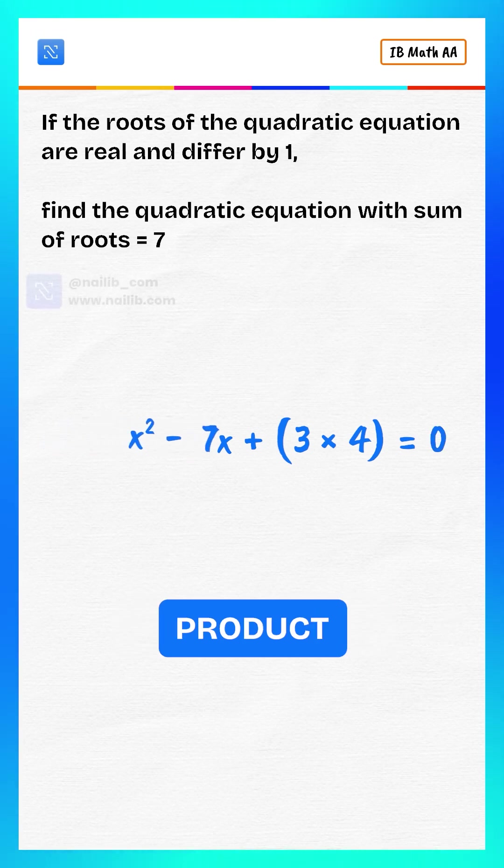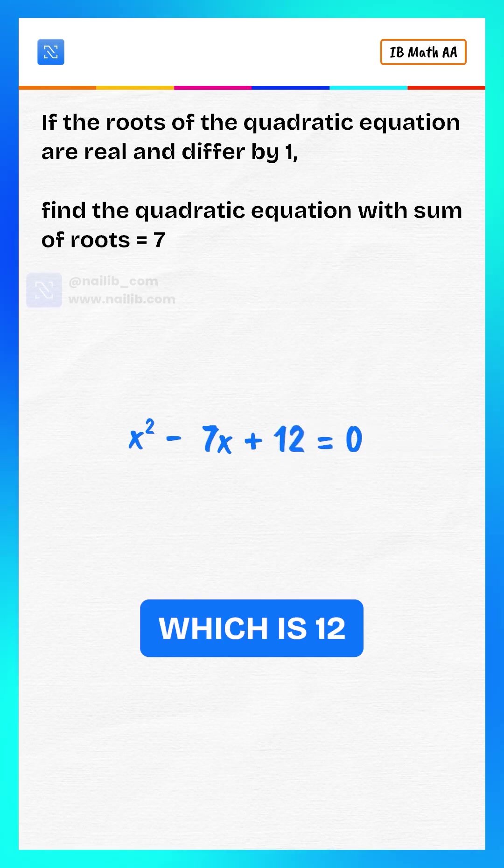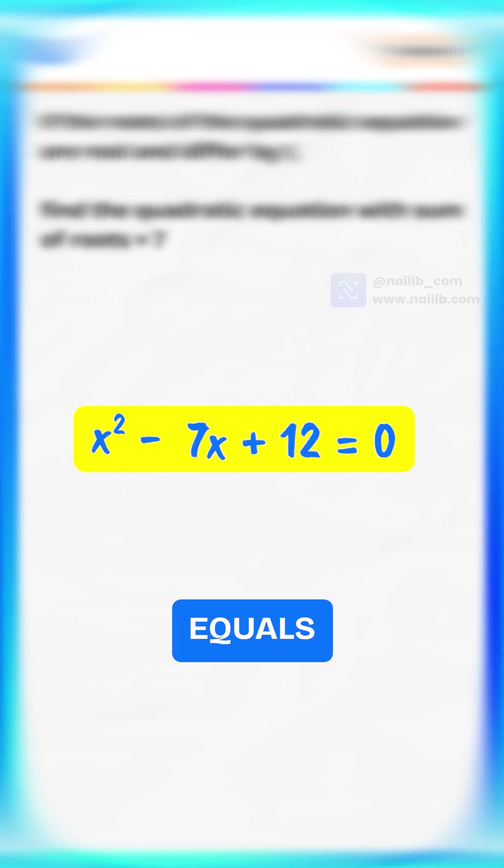Sum of roots is 7. Product of roots is 3 multiply by 4, which is 12. The equation becomes x squared minus 7x plus 12 equals 0.